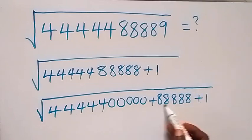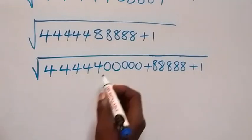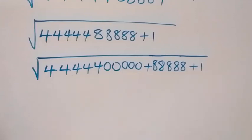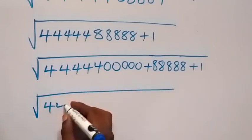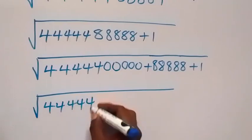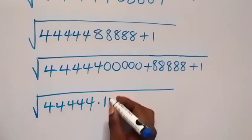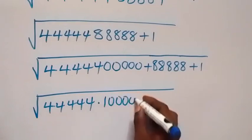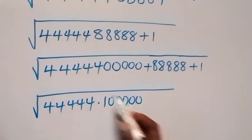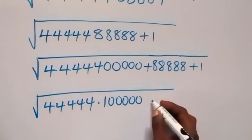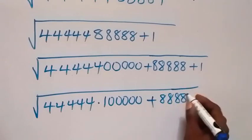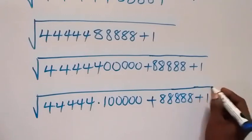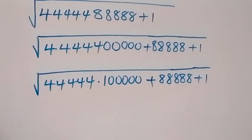When we add this 8 to this we get that number back. From here we can also separate the five 0s, and this will become square root of 44444 times 100000. When we multiply this we still get 88888888, then plus 1.